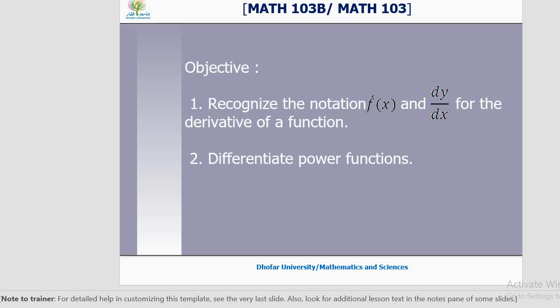How do you write a derivative of a function? We write f prime x — there is a comma after f towards the upper right-hand side, it is called f prime x. This comma in mathematics is called prime. We also write dy by dx, or we also write df by dx.